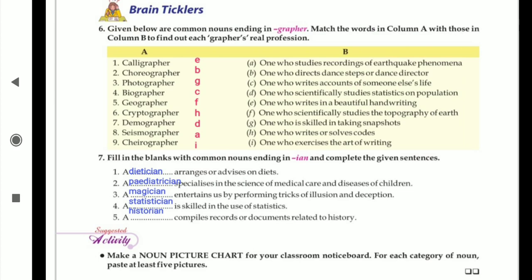Calligrapher's work is what? E - one who writes in beautiful handwriting. That person is called as a calligrapher. Now choreographer, who is the choreographer? That is B - one who directs dance tapes or dance director. Do you know any famous choreographer? Farah Khan, Remo D'Souza. Photographer, what is the work of photographer? G - one who is skilled in taking snapshot photos.